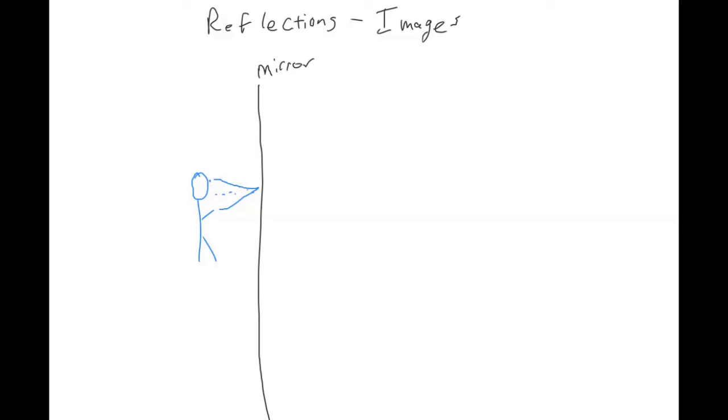So in order for you to see something, light from that thing has to reach your eyeball. So if you're looking at the mirror... So remember the angle of reflection has to be the same as the angle of the incident beam.